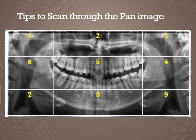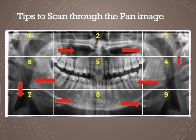A useful tip for reading panoramic images is to divide the panoramic image into nine segments for ease of diagnosis so that no findings are missed. Move from the first segment to the second, third, fourth, fifth — the area of dentition — then sixth, seventh, eighth, and ninth. Your eyes scan through from one corner of the image to the other in a grid pattern, having divided it into nine segments.